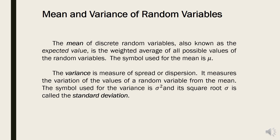The variance is a measure of spread or dispersion. It measures the variation of the values of a random variable from the mean. The symbol used for variance is sigma squared, and its square root, sigma, is called the standard deviation. When we talk about variance, sigma is squared, while the square root of variance gives the standard deviation.